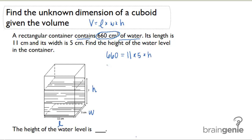If I solve this equation, I would have 660 equals 55 times H. And if I divide both sides by 55, I would get H equals 12. So the height of the water level is 12 centimeters.